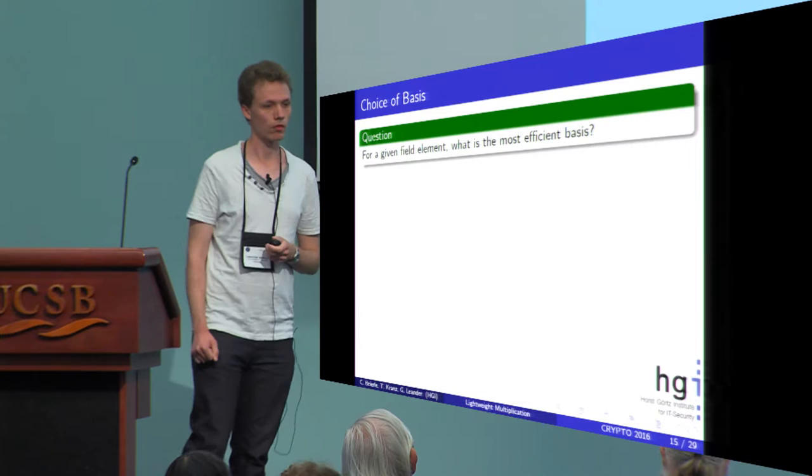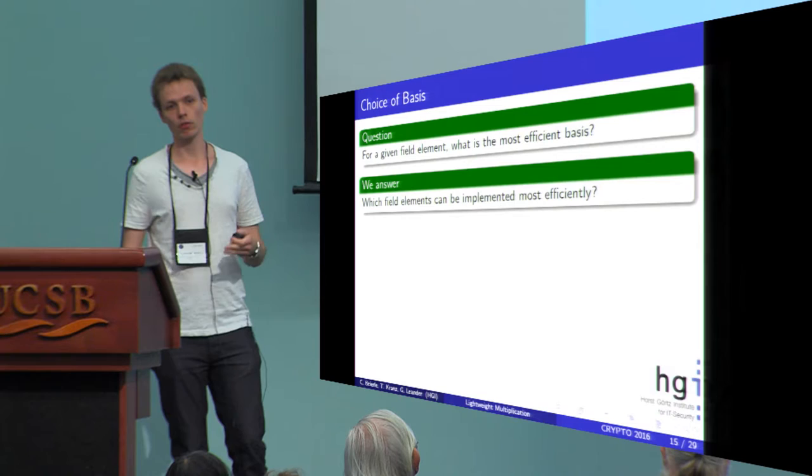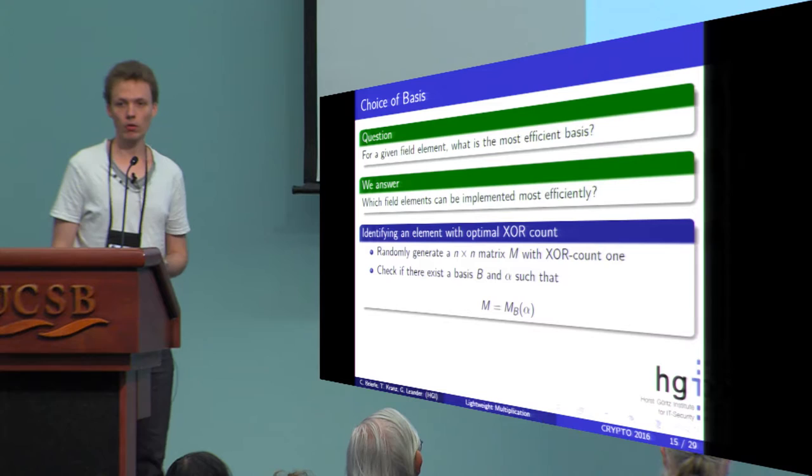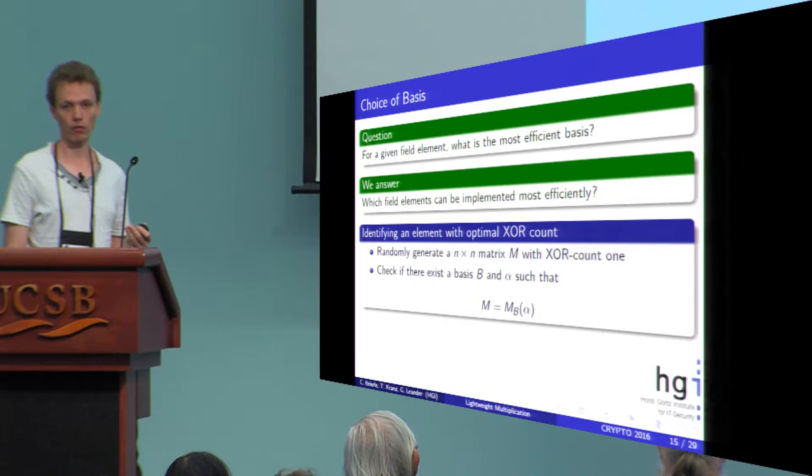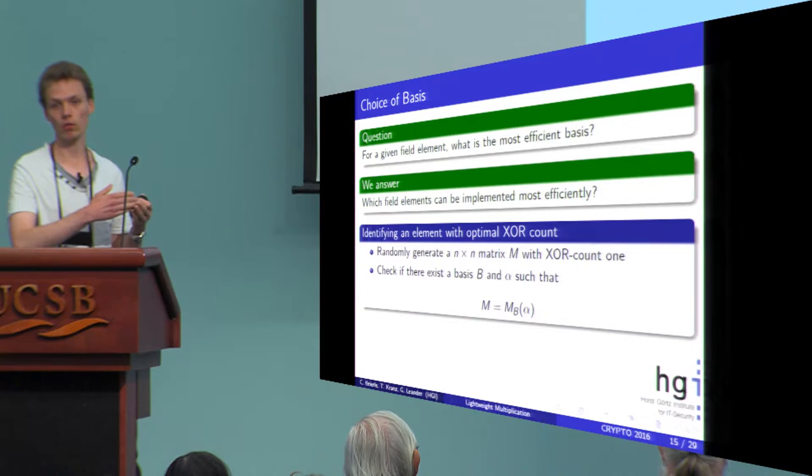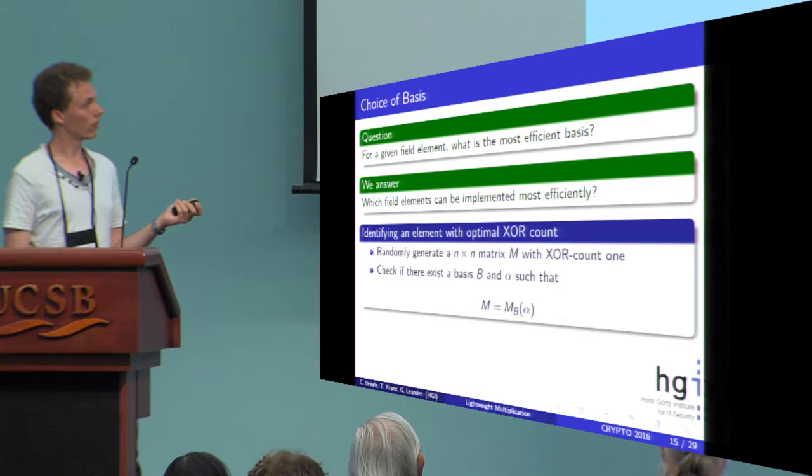Back to our question: for a given field element, what is the most efficient basis? We want to answer the following: which field elements can be implemented most efficiently? So we kind of turn the question around. The first step we did is we tried to identify elements with optimal XOR count based on a search. We randomly generated n times n matrices with XOR count one. We know the form of these matrices—they must be permutation matrices with one additional non-zero entry. Then we checked if this matrix corresponds to a basis and an alpha such that M is this M_alpha beta, the multiplication with the element alpha.